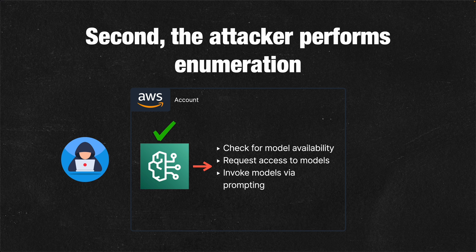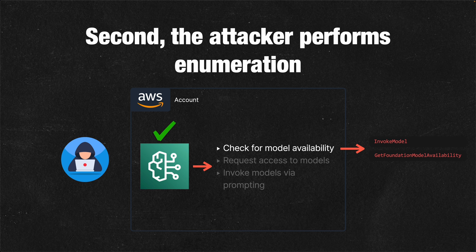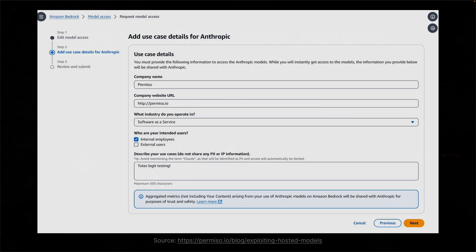The most common ways to check for model availability are with the InvokeModel API call or the GetFoundationModelAvailability API call. If a model is not available, the attacker can request access through an application process, which can be done either via the AWS console or programmatically. But once the attacker has access, they then invoke and prompt the models.